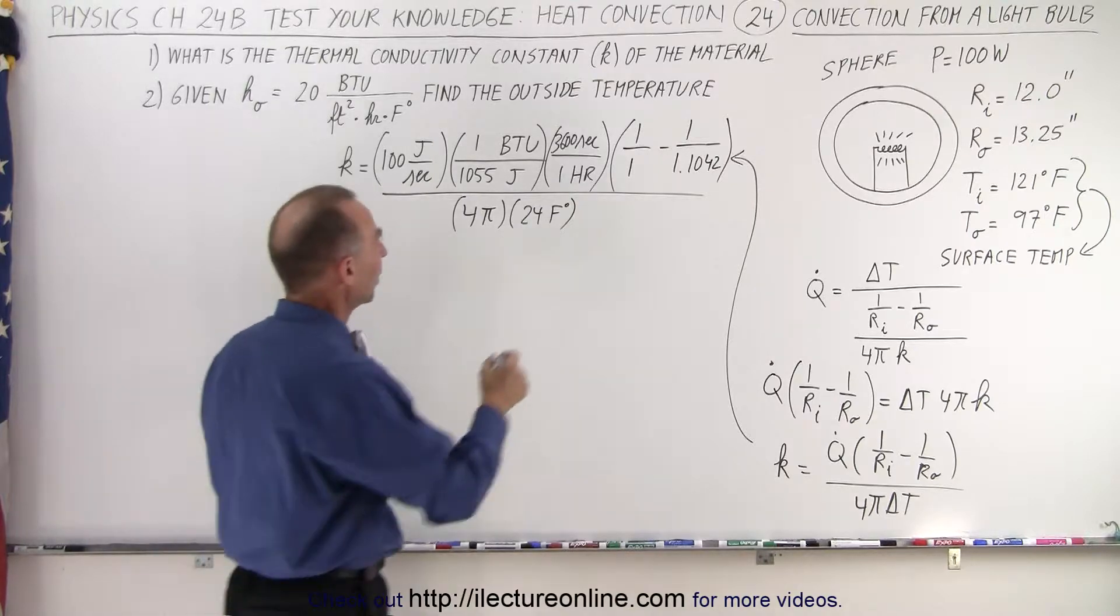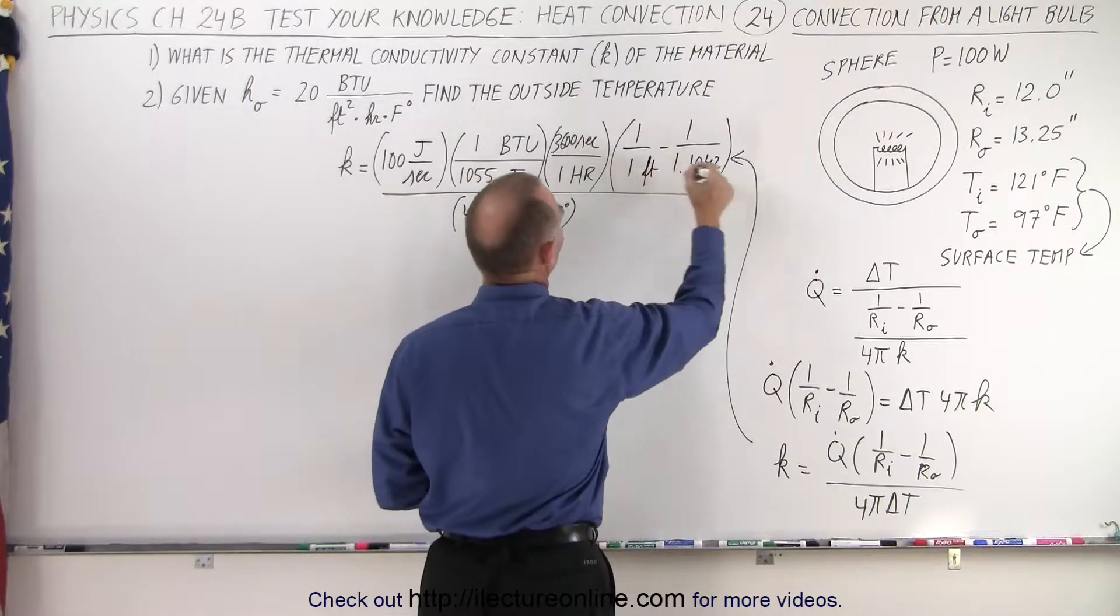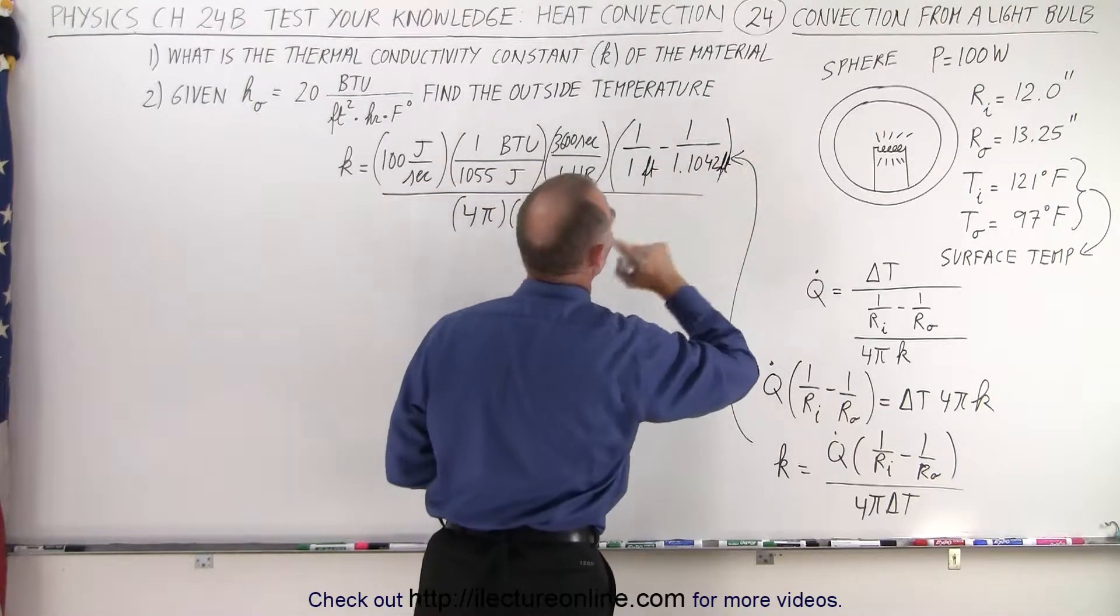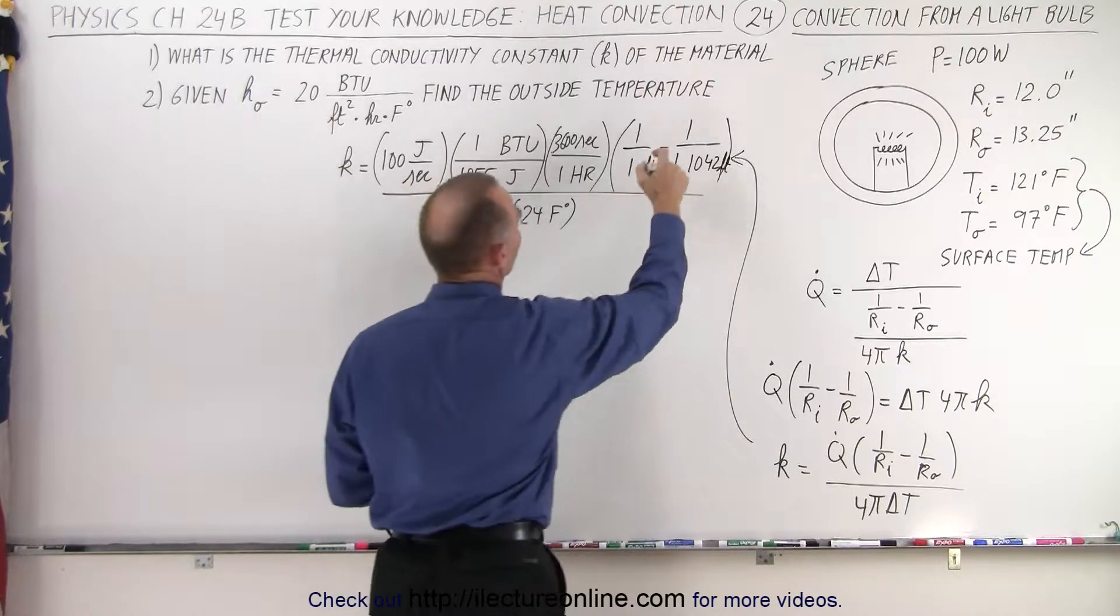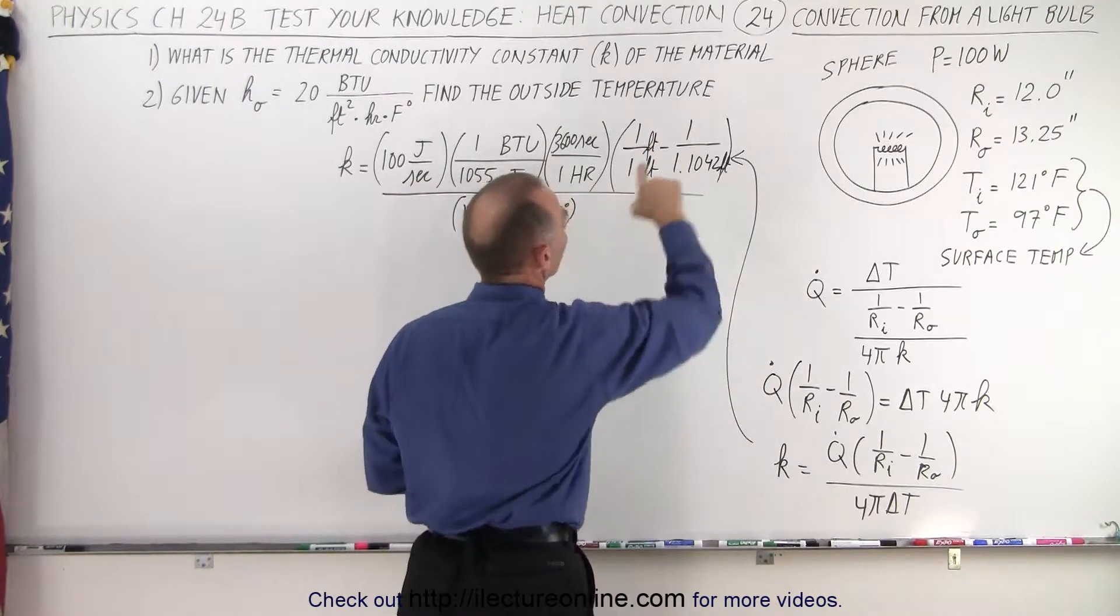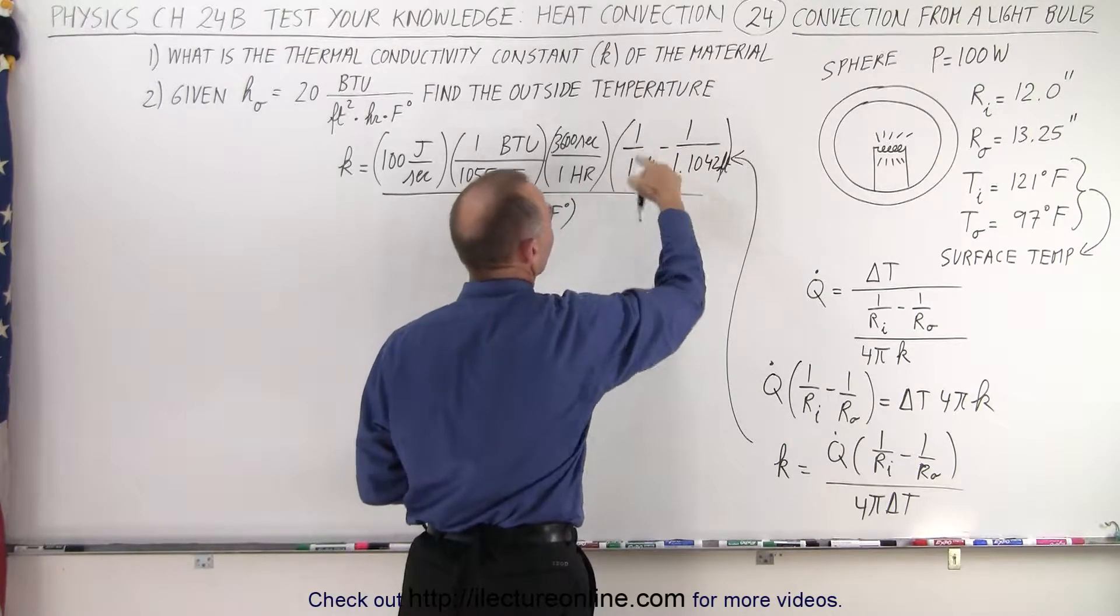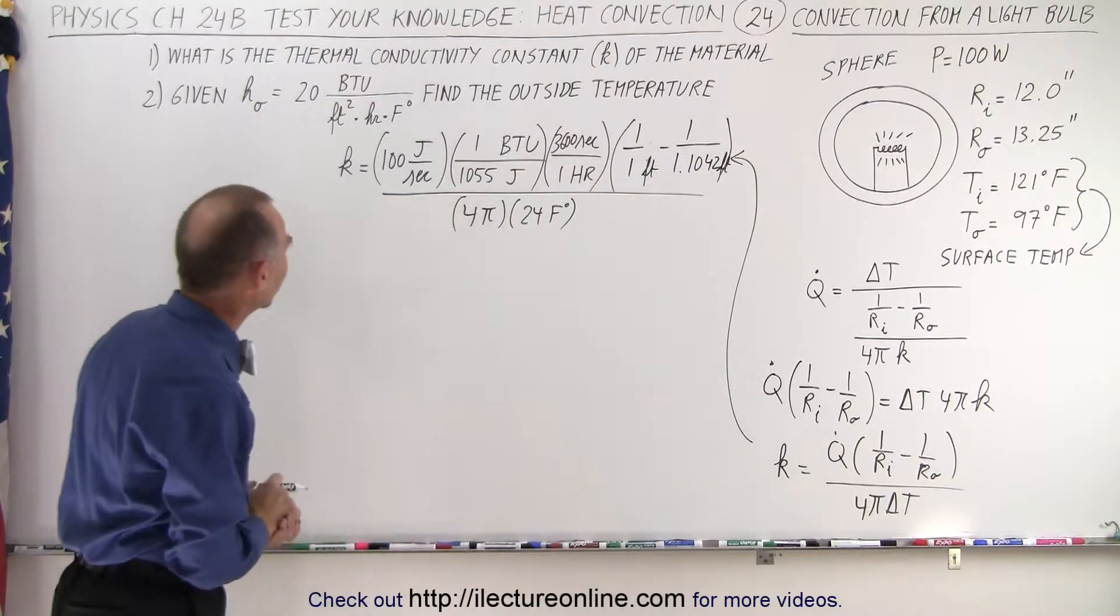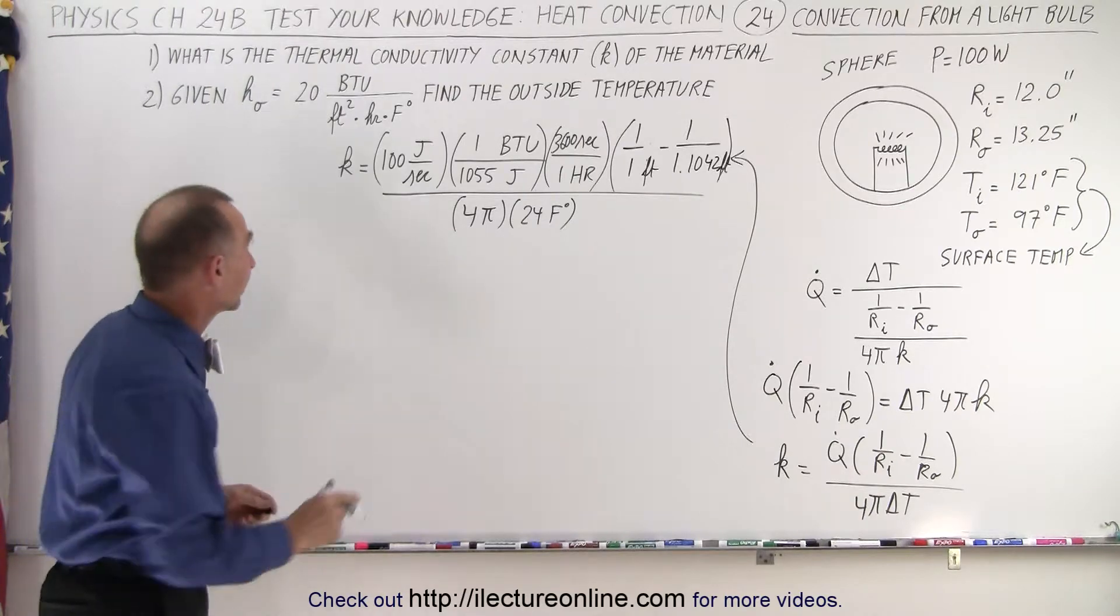And then we divide that by 4 pi times the difference in temperature, and the difference in temperature is going to be 24 Fahrenheit degrees. And notice that this is going to be in feet, and this is going to be in feet as well. One over one foot, or actually it should be this many feet, feet is in the bottom, it's going to be one over the radius. That's correct for the units.